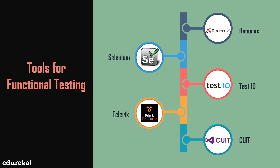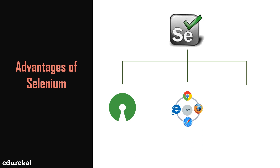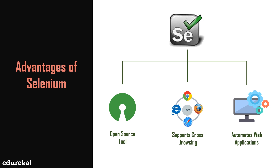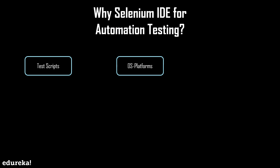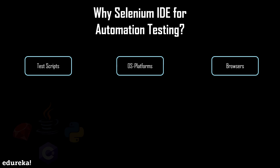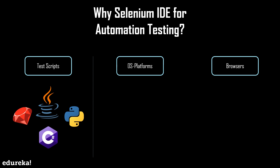Out of all these tools, Selenium is one of the most preferred tools for functional testing. Selenium is an open source tool used for automating test cases carried out on web browsers or web applications — it supports cross-browsing and automates web applications with no licensing cost, which is a major advantage over other testing tools. Test scripts can be written in any of these programming languages: Java, Python, C#, PHP, Ruby, Perl, and .NET, and tests can be carried out on Windows, Mac, or Linux.